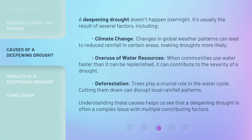A deepening drought doesn't happen overnight. It's usually the result of several factors, including climate change. Changes in global weather patterns can lead to reduced rainfall in certain areas, making droughts more likely. Overuse of water resources — when communities use water faster than it can be replenished — can also contribute to the severity of a drought.